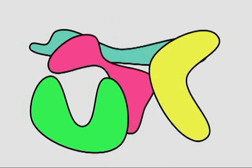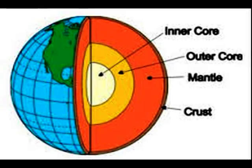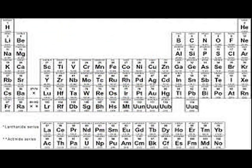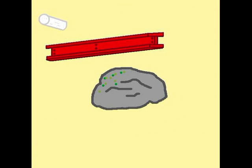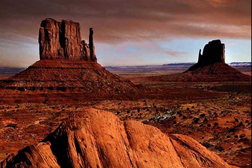The geosphere includes the crust, the mantle, the liquid outer core, and the solid inner core, along with all of the metals and metalloids of the periodic table. A few examples are chalk, rocks, steel girders, and concrete.